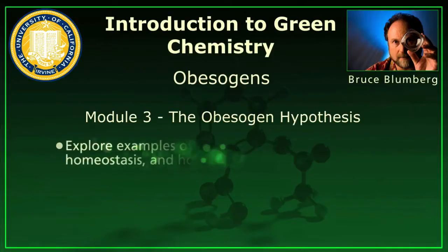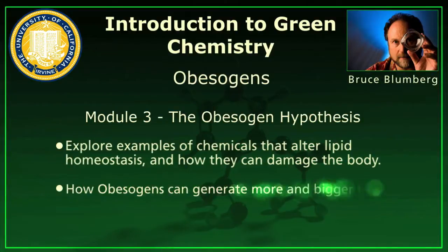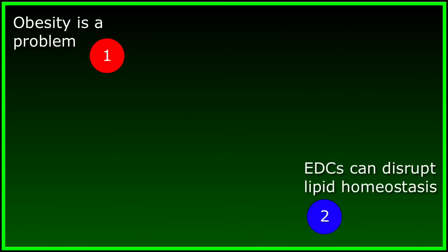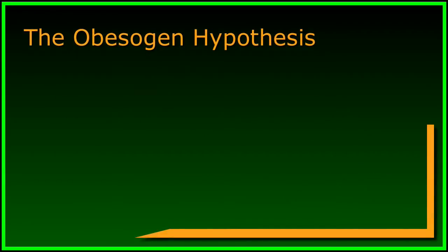In this module, we're going to discuss the obesogen hypothesis together with evidence and examples that show how obesogens can and already may create more and bigger fat cells. The obesogen hypothesis itself simply states that there is a class of endocrine-disrupting chemicals right now in our environment, that I call obesogens, that have the ability to cause an increase in human fat, and therefore contribute to the obesity epidemic.